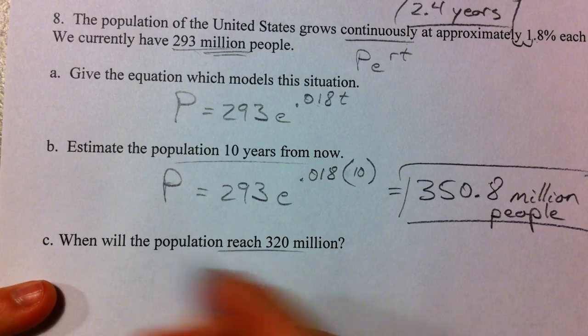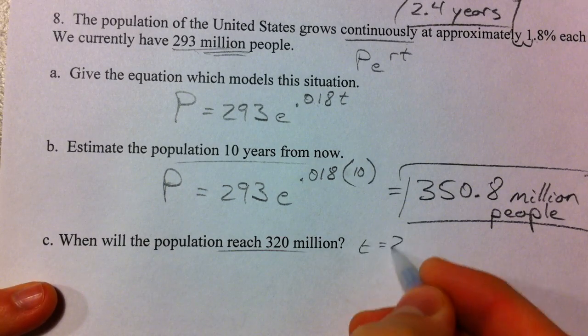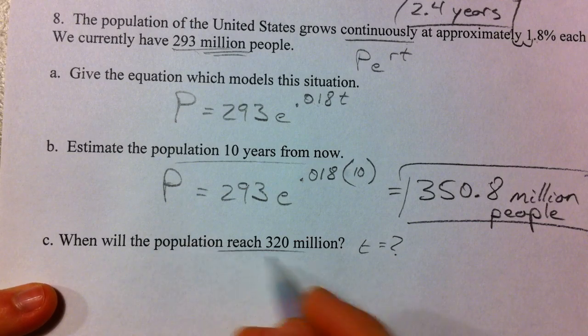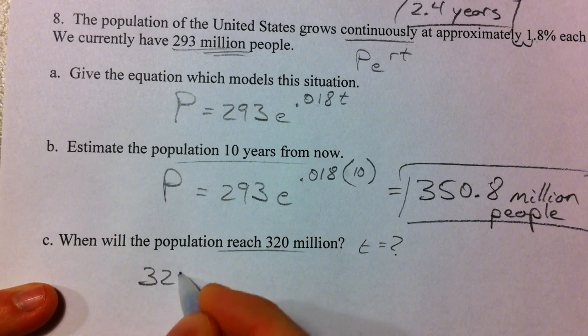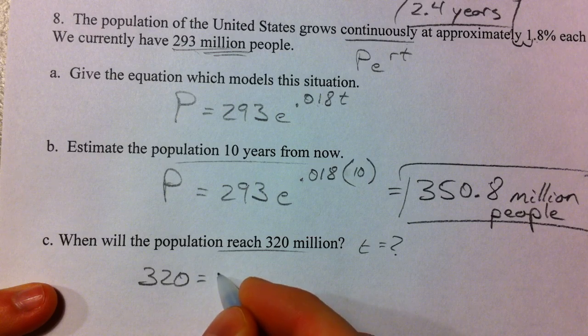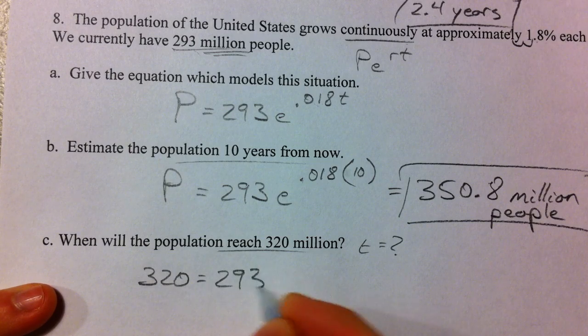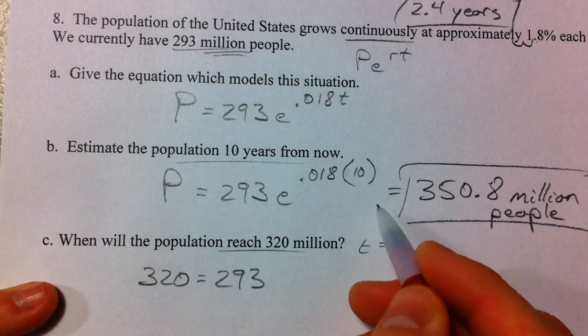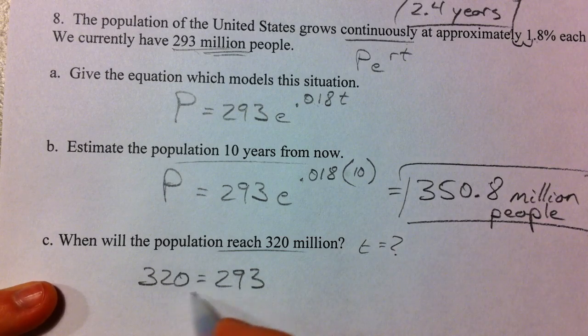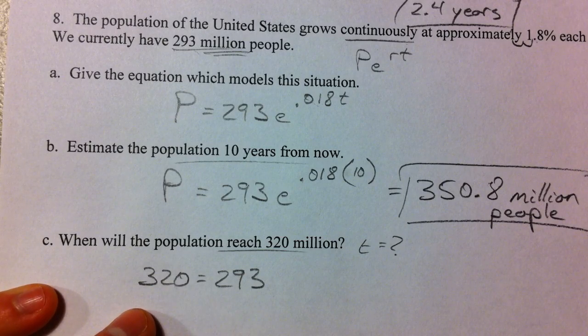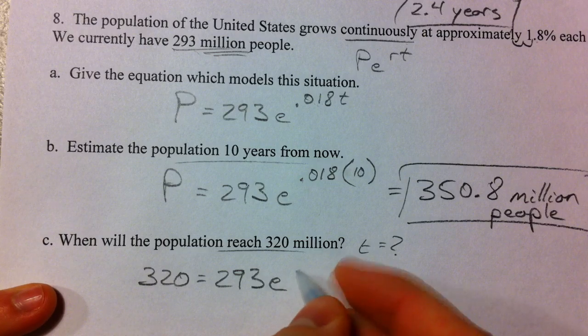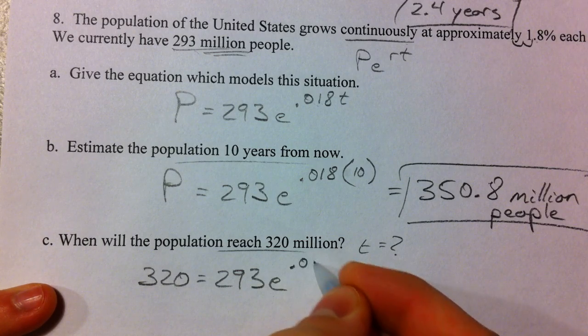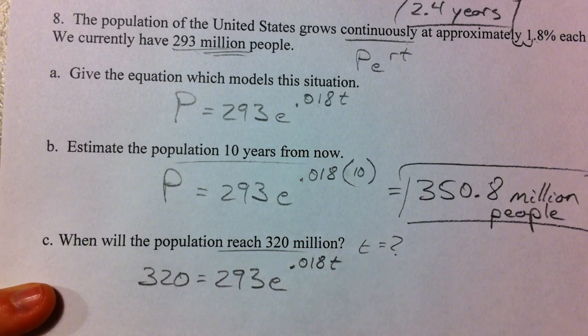When will the population reach 320? So when, we're looking for a T. And we want the population to be 320. So that's going on the other side. We just saw that in 10 years, it's going to be at 350. So before that, it's going to hit 320. And we're solving the equation that we had with T in it.